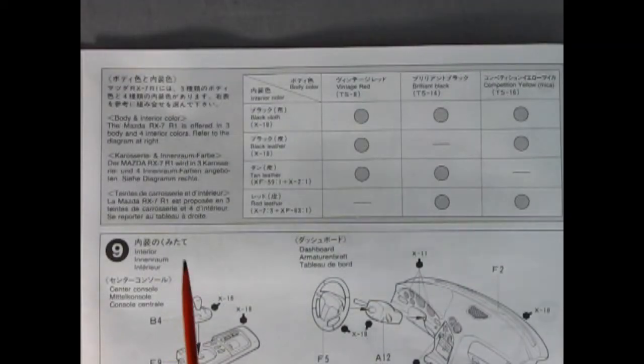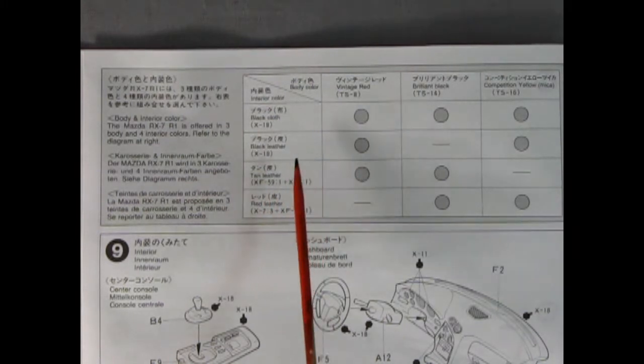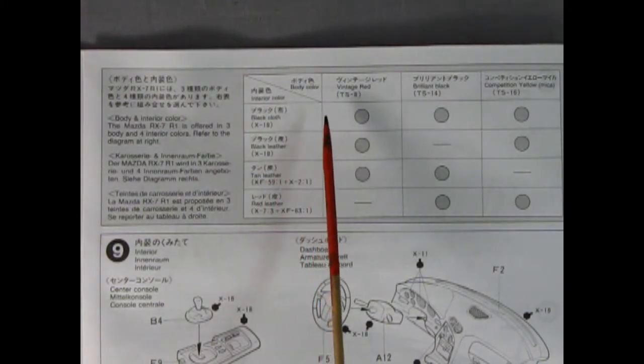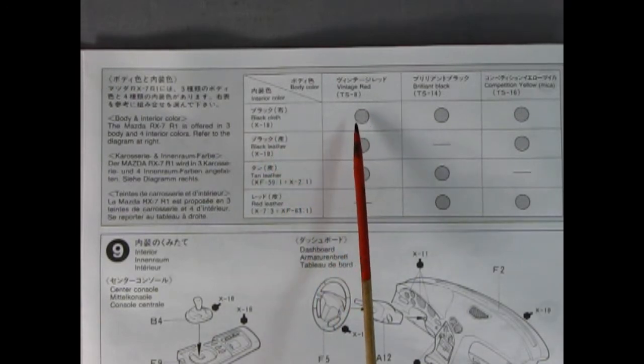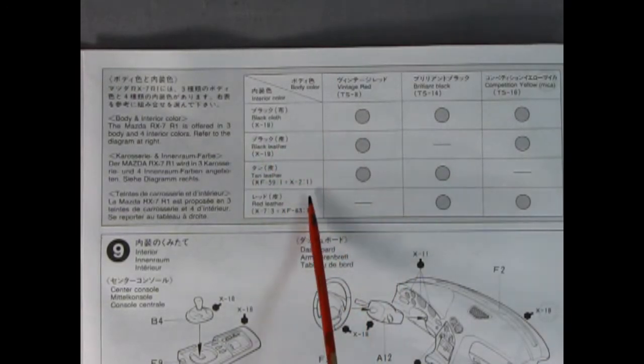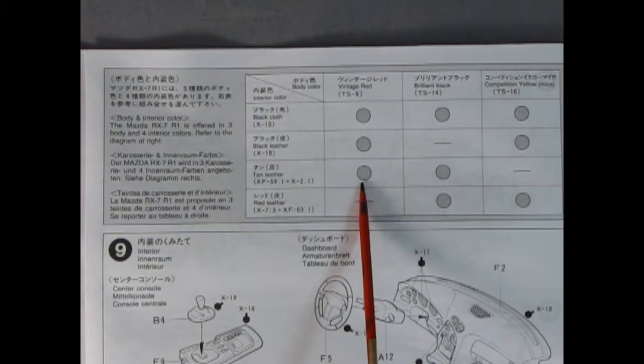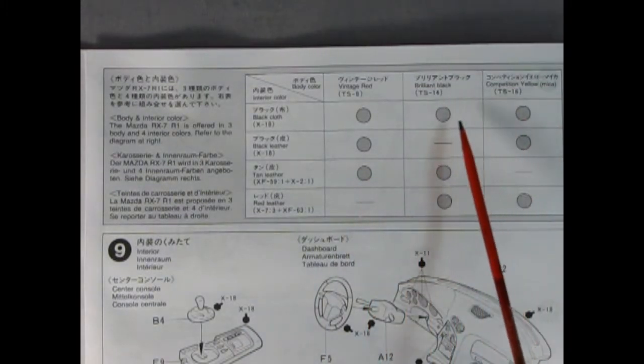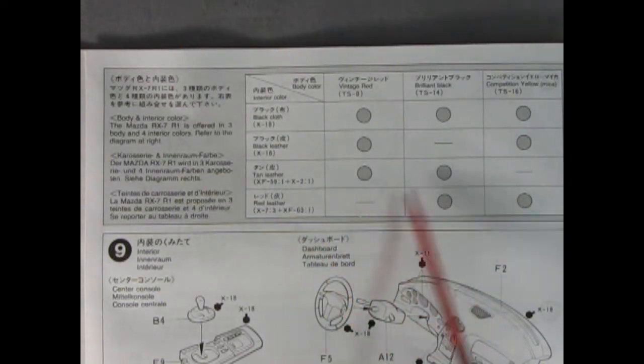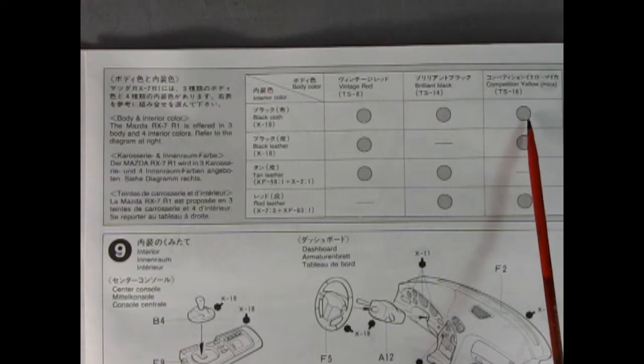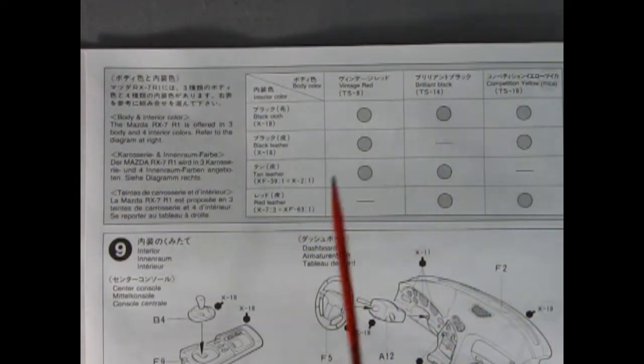Now I like this panel because this has our interior and body colors and just how they linked up on the real cars. For example you could paint your model vintage red and put in the black cloth upholstery or black leather or even tan leather. If you're building the model black you use black cloth, tan, or even a red leather. If you're doing your car in competition yellow you get the black cloth, black leather, and the red leather.